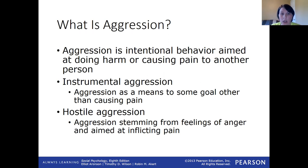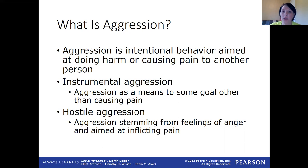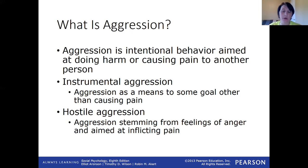There are two types of aggression. You have instrumental aggression, which means you're using it as a means to an end — you're not necessarily trying to hurt somebody, you're just using it to meet a particular goal. For example, if you're playing a sport and you're trying to get the ball, you're going to be aggressive and get at somebody, but you're not angry at that person. The goal is to get the ball, not to hurt them.